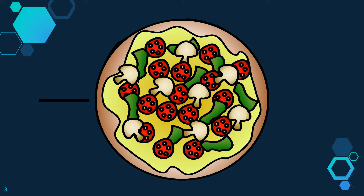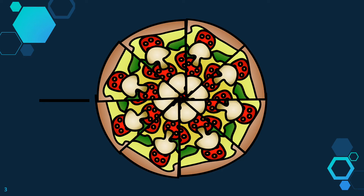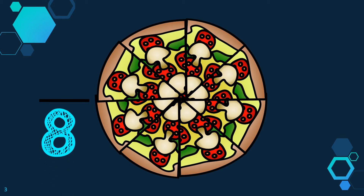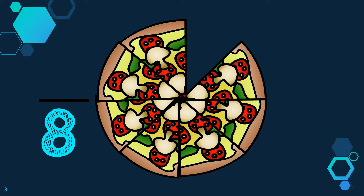Let's look at an example. This is one whole pizza. Whole means entire or all. Now let's say we cut the pizza into 8 slices. I will put 8 in the denominator because my pizza has been cut into a total of 8 slices. If I eat 1 slice of pizza, I have eaten 1 out of 8 slices, or 1 eighth.